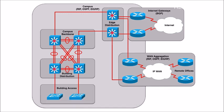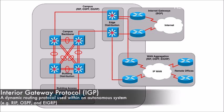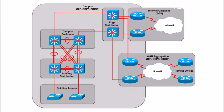Within the campus, we're probably using some sort of IGP — an interior gateway protocol — like RIP, OSPF, or EIGRP, all three of which we're going to be discussing in this course. We might have similar IGPs and routing protocols used in the WAN aggregation layer going out to our remote offices.